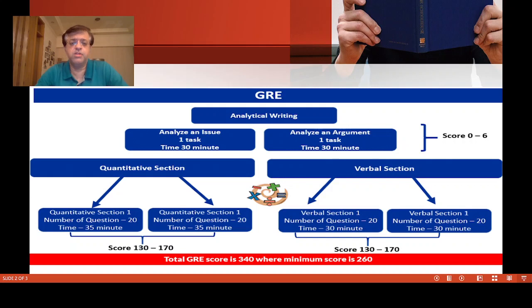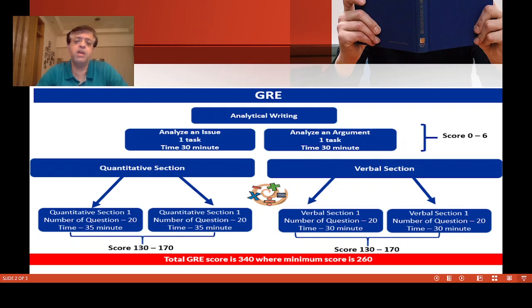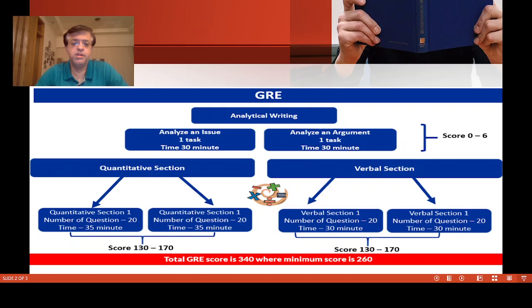When there are five sections, one of them is not scored, but you as a student will not know which one it is. So treat every question in every section as if it will be scored. This fifth section, when included, is for ETS's internal experimentation purposes. You don't need to worry about it — just do your test with full focus.